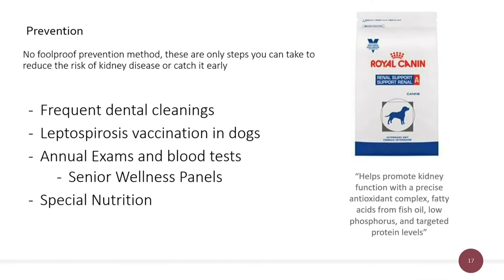Some prevention measures for kidney disease — though none are foolproof — include dental cleanings, which help reduce the risk of bacteria entering through the gums and reaching the kidneys. A leptospirosis vaccine is also helpful. Annual blood tests can catch disease early, and senior wellness panels help monitor BUN and creatinine levels. Special nutrition diets are another preventive measure.